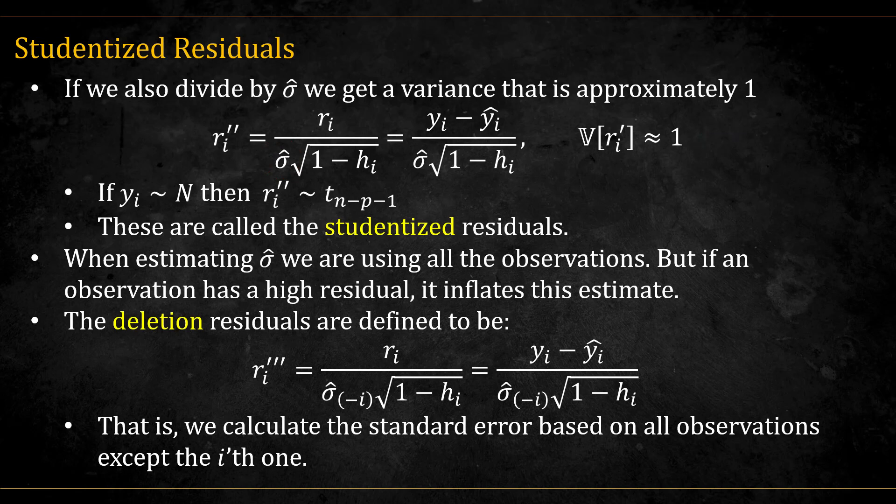Approximately because of the estimation. If we knew the real sigma, it should be equal to 1. If we assume normality, then these residuals follow a t-distribution, which is approximately normal for large n.